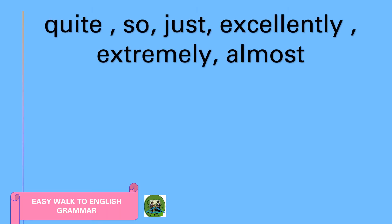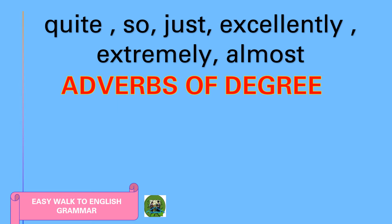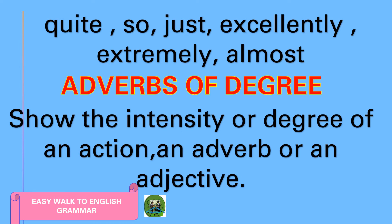What are these words — quite, so, just, excellently, extremely, almost — called in English? They are called adverbs of degree, because they show the intensity or degree of an action, an adverb, or an adjective. By now you should be okay with this point, as we have dealt with a number of examples. If you are still doubtful, please re-watch the video.